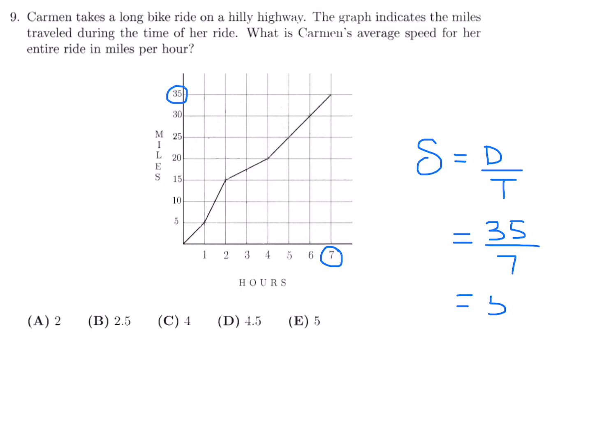So we put the seven in the denominator. So 35 divided by seven is five. And that's of course miles per hour. So number nine, the answer is E.